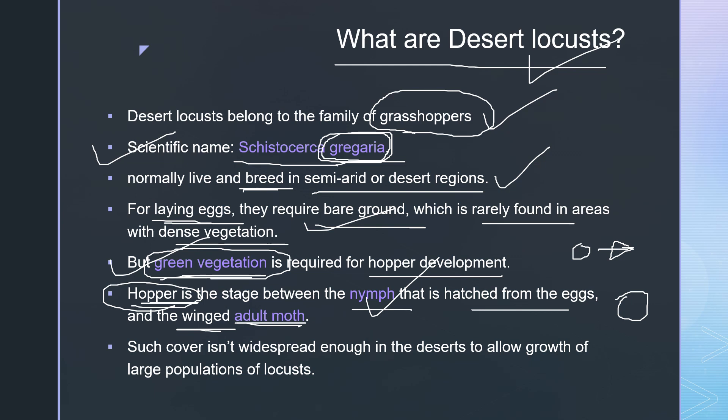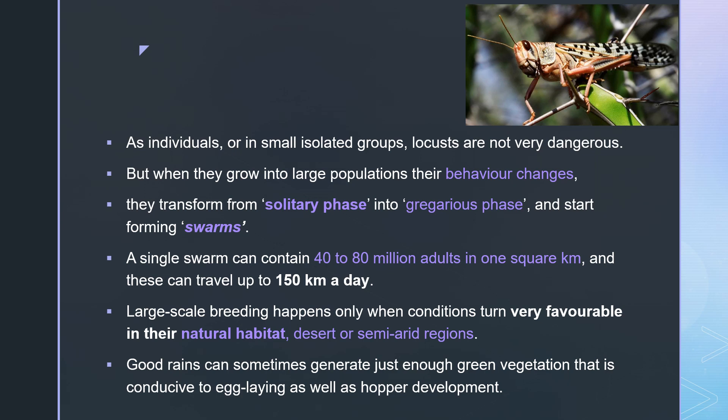Such green cover isn't widespread enough in the desert, so from the areas where they initially develop, they move to areas where green vegetation is available. Generally, they develop around the areas of the Horn of Africa in the African continent, and in Saudi Arabia and Pakistan.